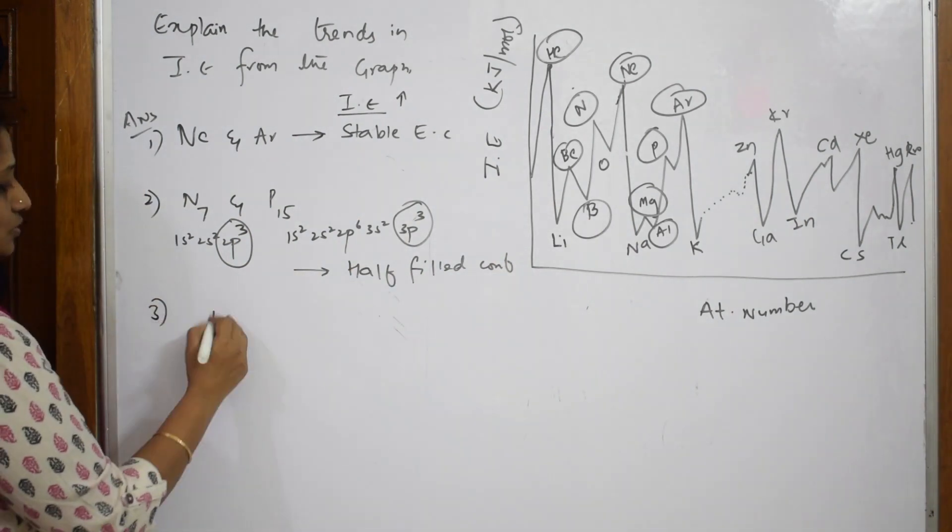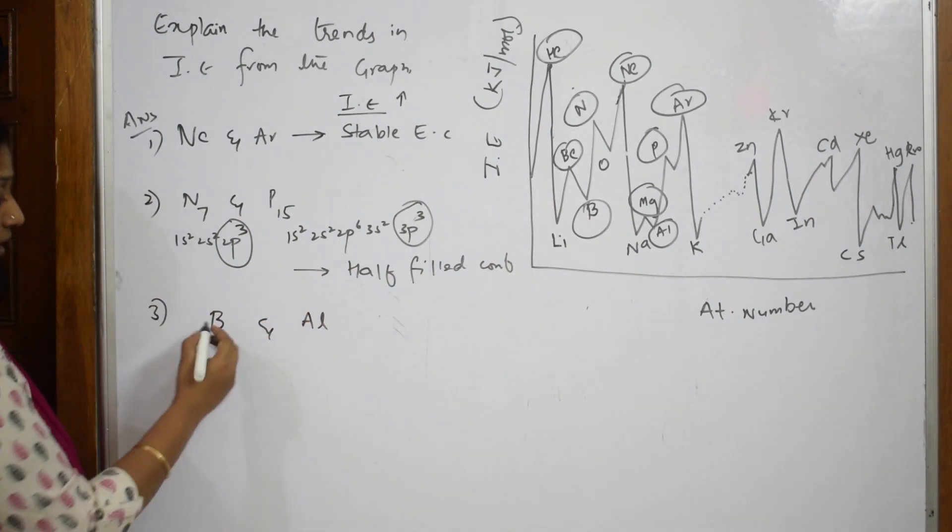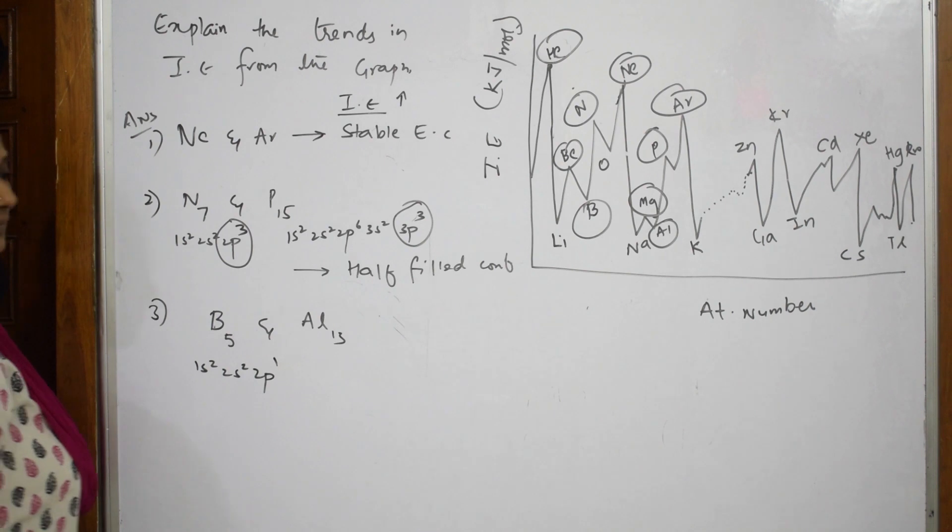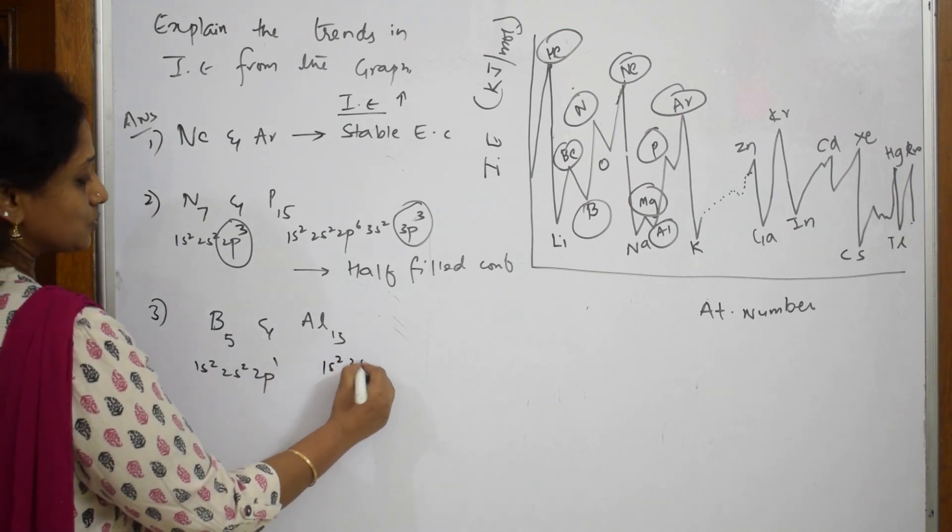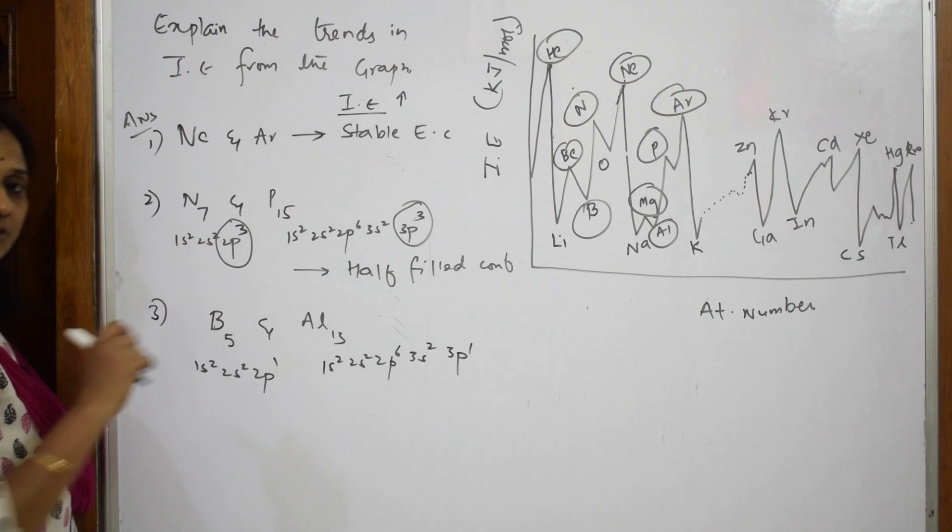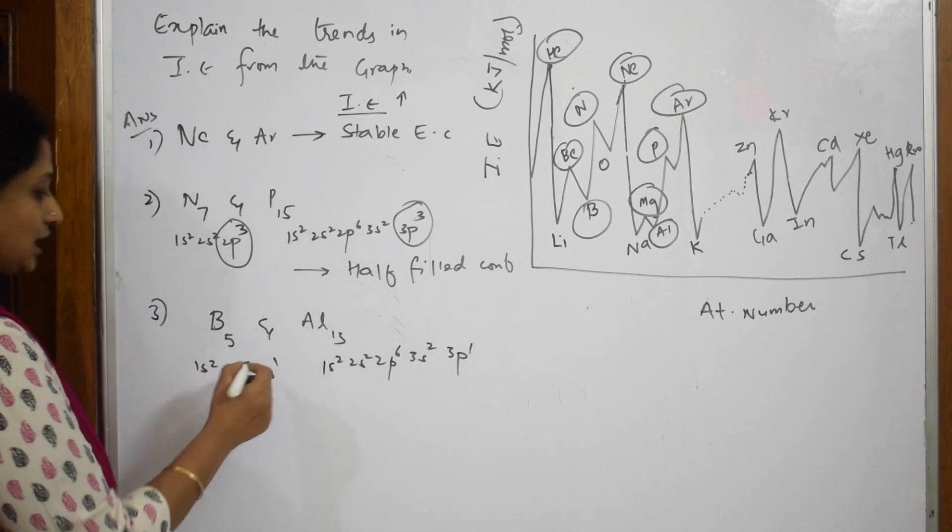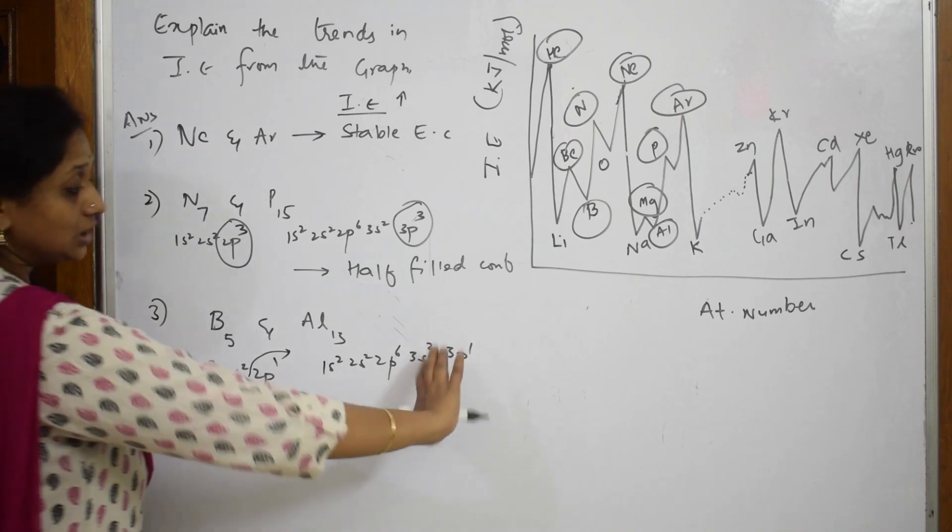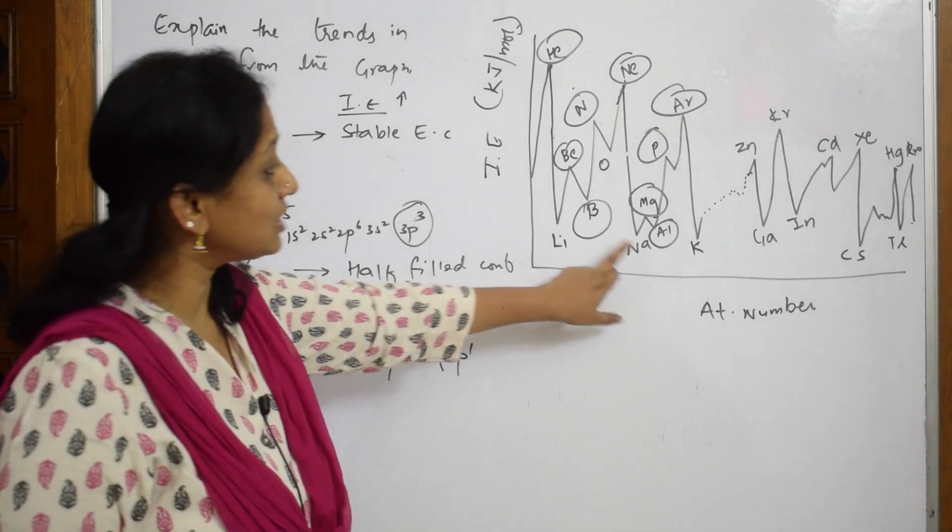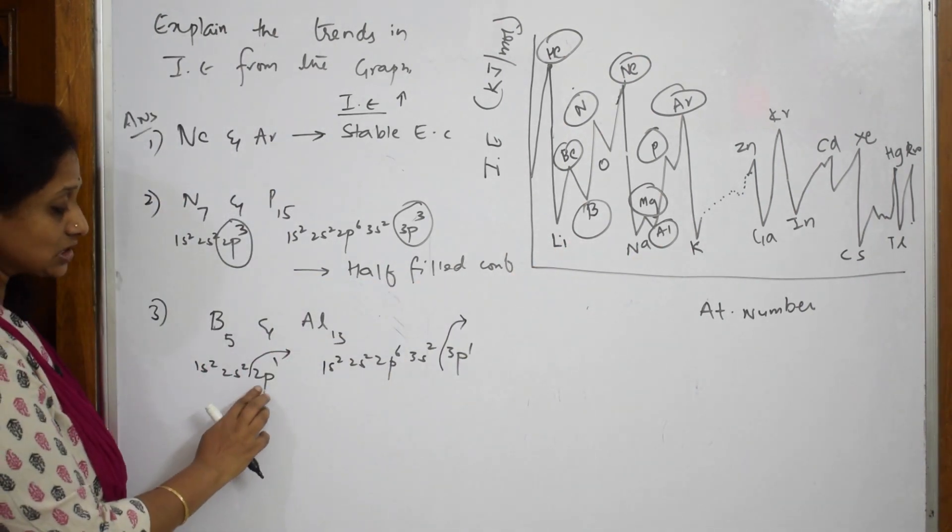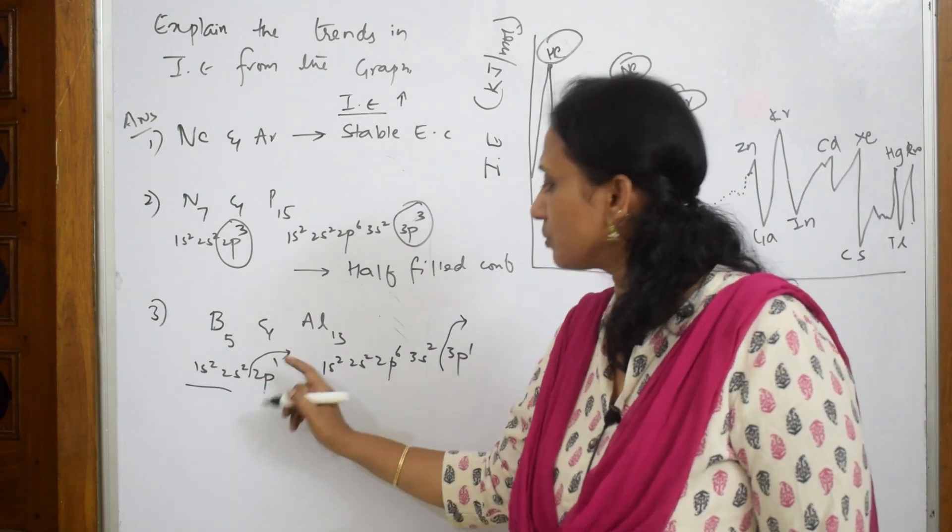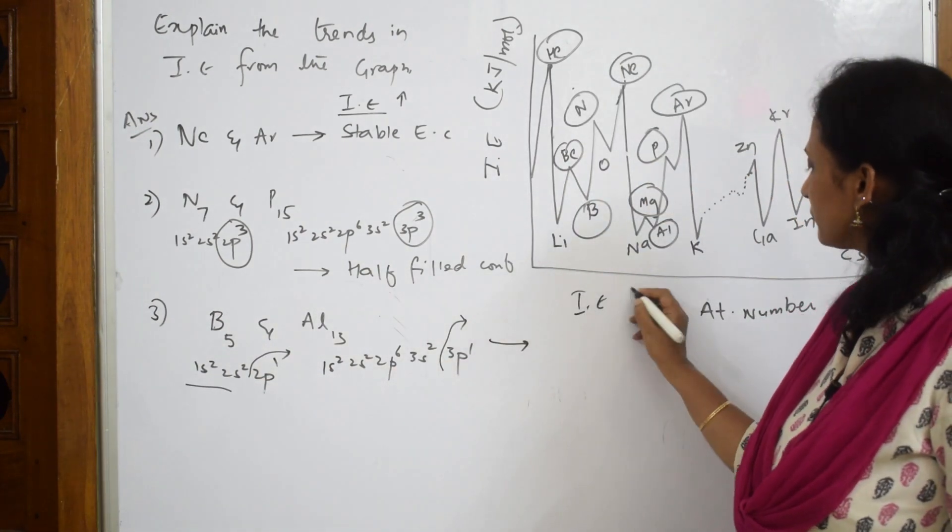Now let us come back to boron and aluminum. Boron is atomic number 5, aluminum is 13. For boron: 1s2 2s2 2p1. For aluminum: 1s2 2s2 2p6 3s2 3p1. Now suppose if I'm using the first ionization enthalpy, I'm taking out this electron. Here also I'm taking out this electron. Ionization enthalpy values are lower here because I can easily take out this loosely held electron, and the leftover is a stable configuration.